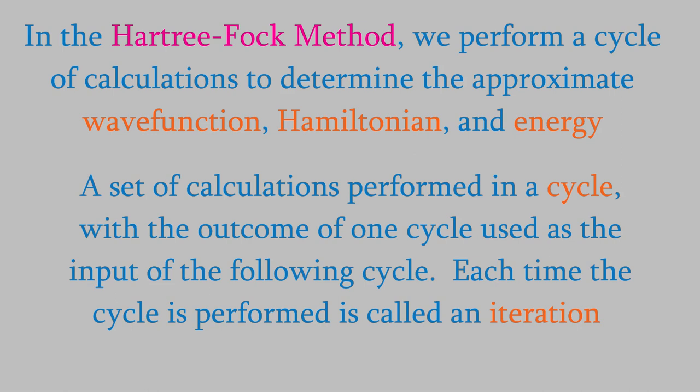The Hartree-Fock method uses a set of calculations that are performed in a cycle. Each time the cycle is performed, the wave function, Hamiltonian, and energy that are calculated are a little more accurate. Therefore, the more times we run through this cycle of calculations, the closer these quantities are to their true values. This type of process, in which each cycle of calculations yields a more accurate result and is used as the starting point for the next cycle, is known as an iterative process.